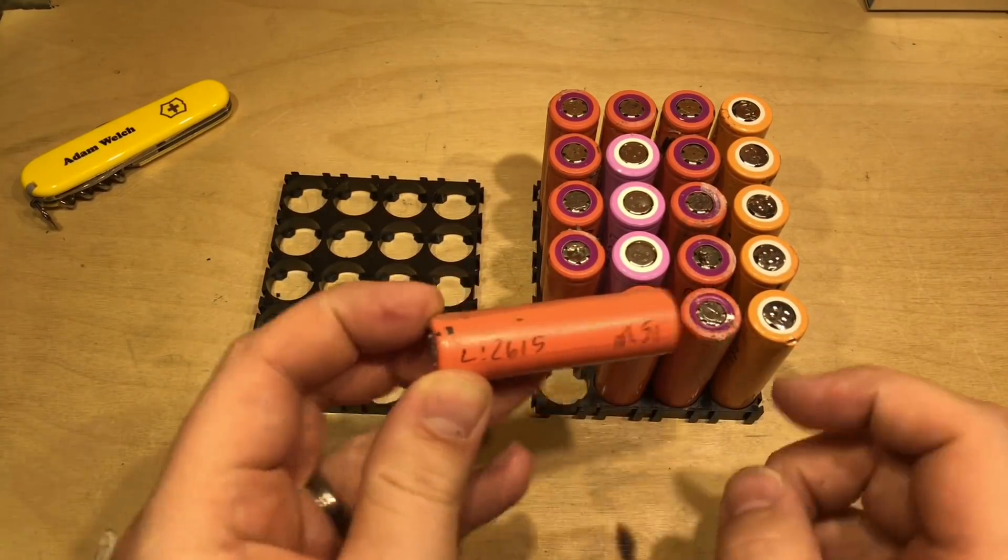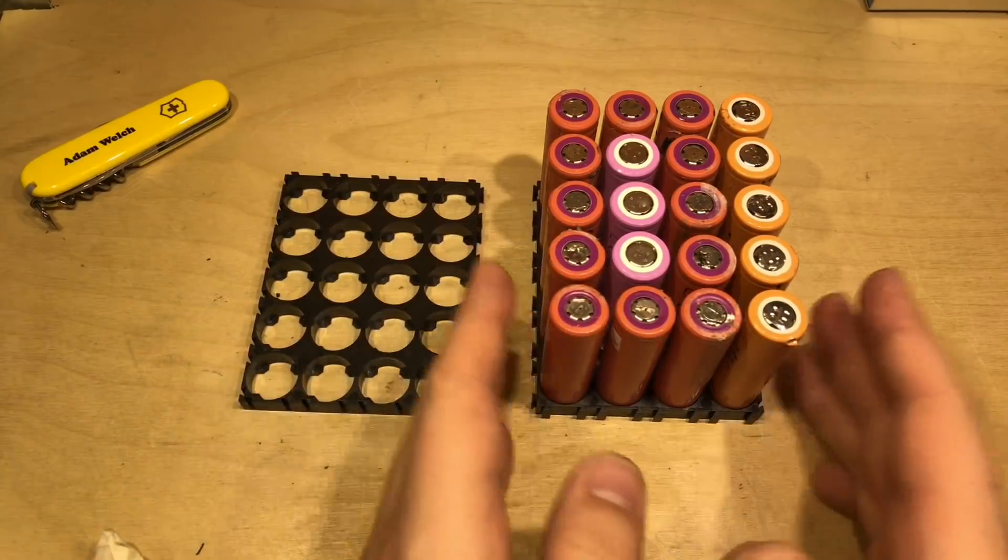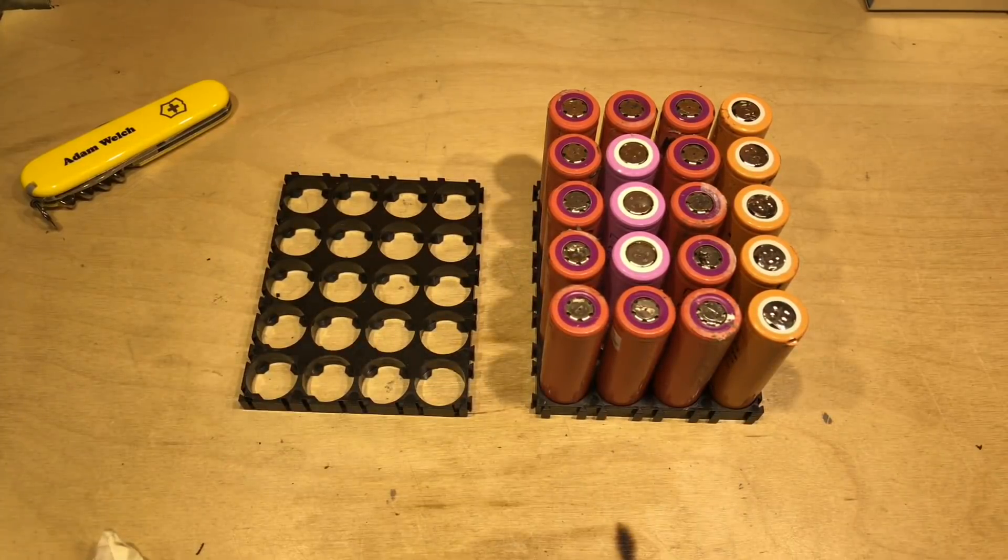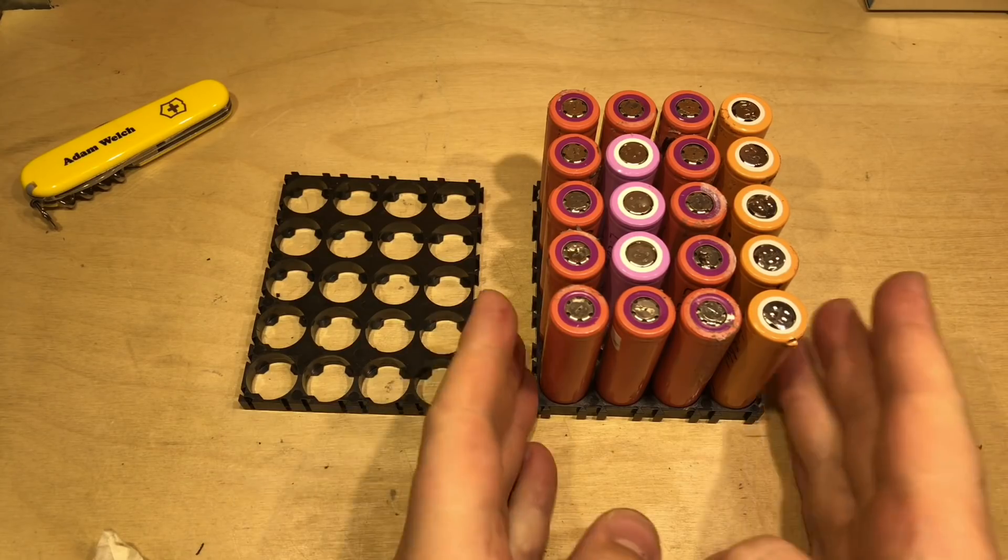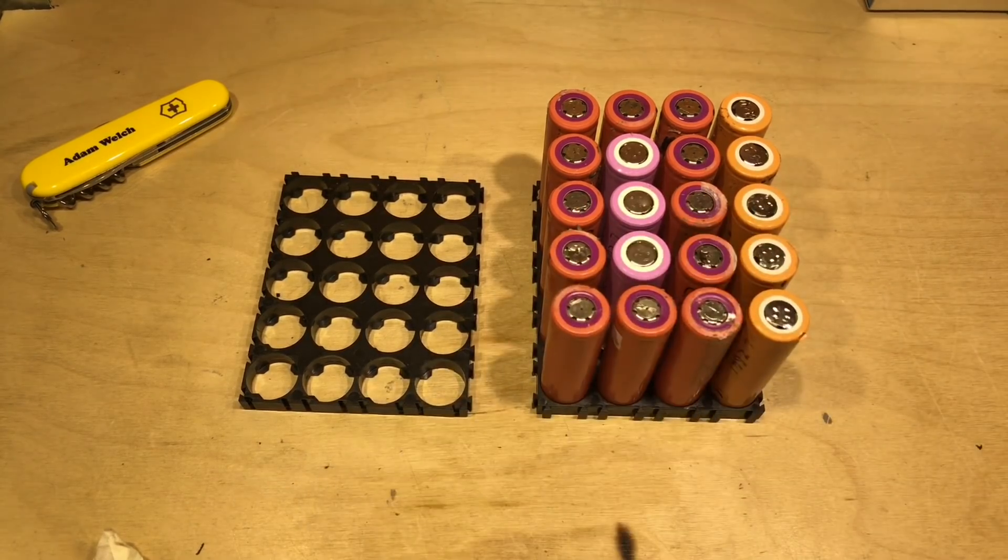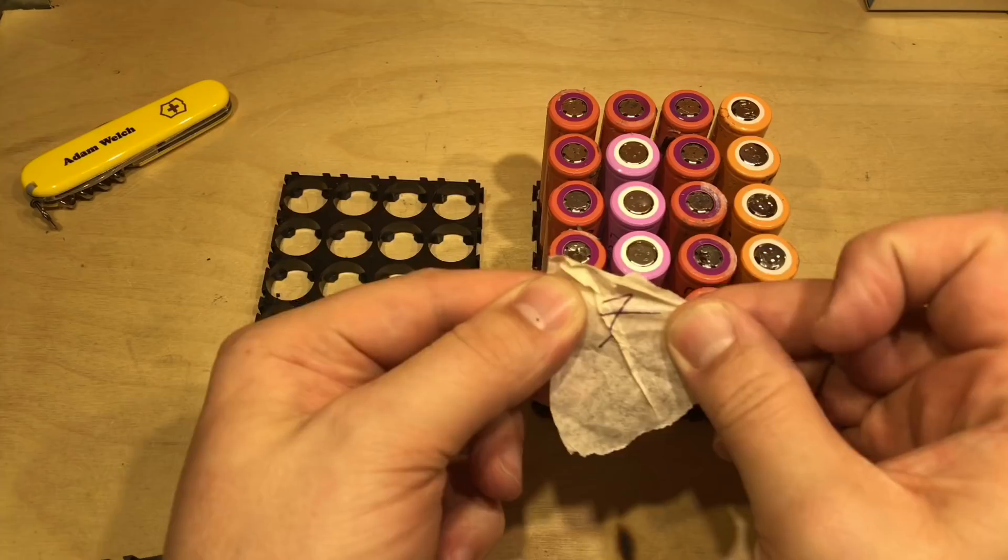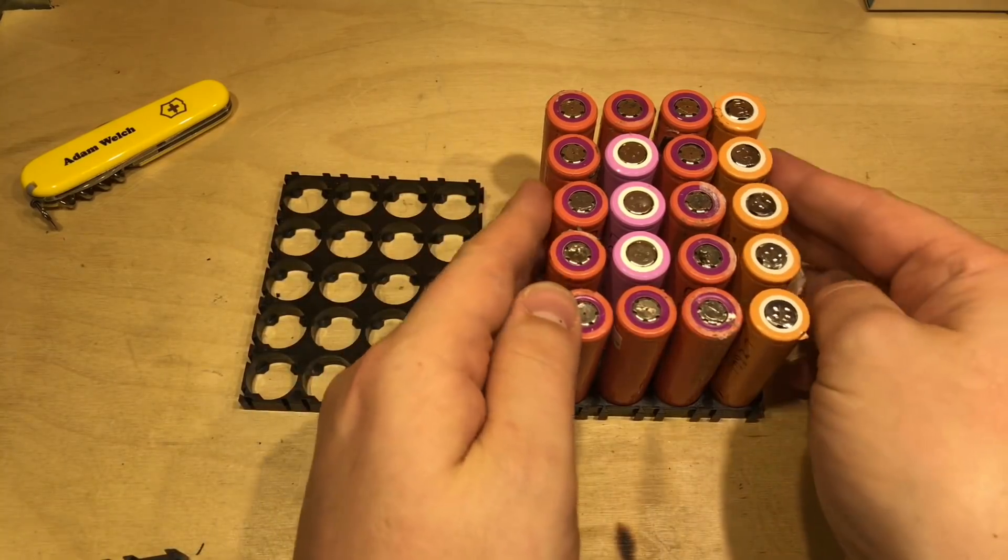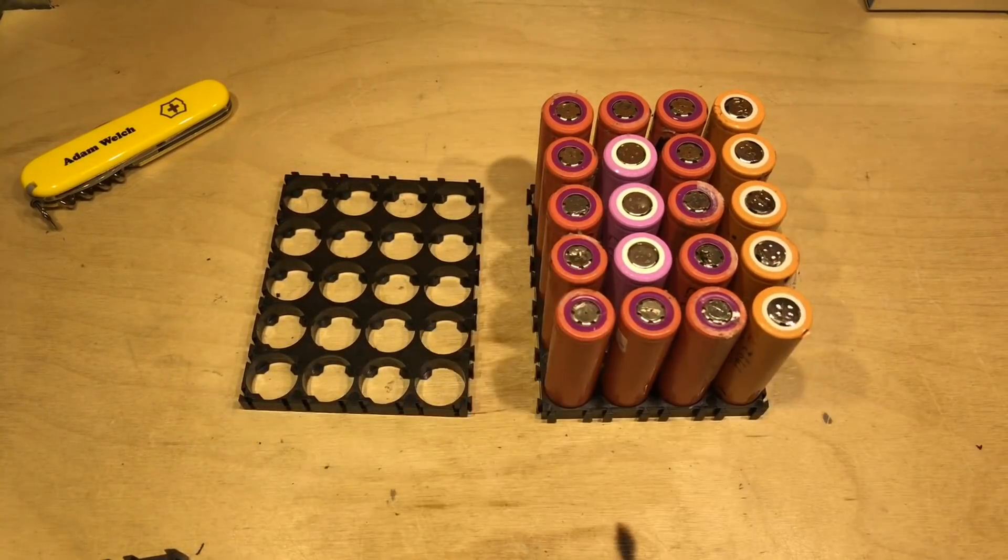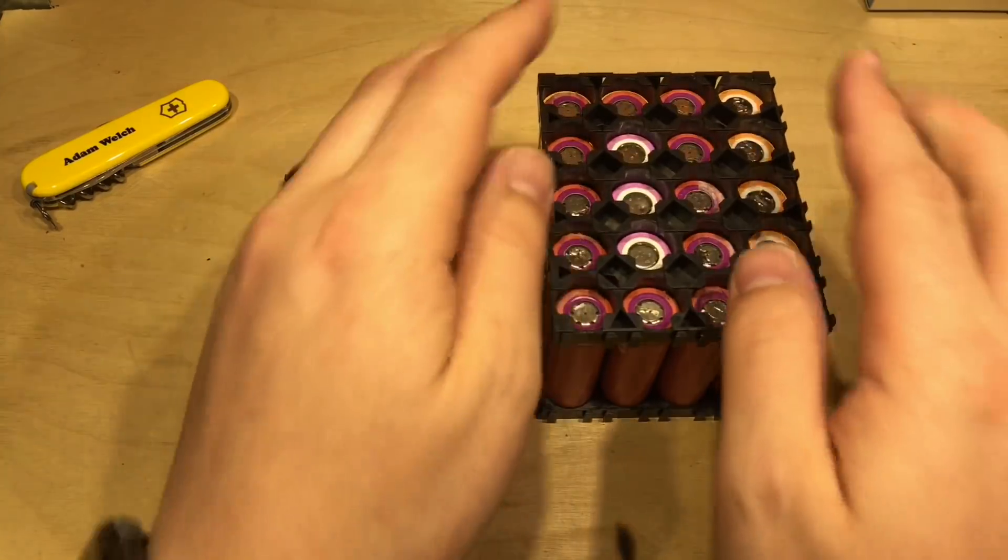2,615 milliamp hours in this one, it grouped them together to make the most even packs possible. So there they are, that's the 20 that make up pack 7 with that scribbled note on there. Let's just drop a top on there.